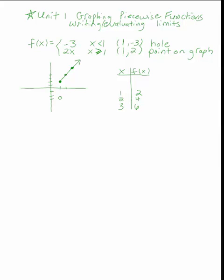For the left piece, I'll pick numbers less than 1, like 0 and negative 1. Plugging those into the top equation, there's no variable, so the output is just negative 3 for both — giving points (0, -3) and (-1, -3). That's just the constant function y equals negative 3. So the piecewise graph is two straight lines. They don't connect — there's a break or jump in the graph at x equals 1.